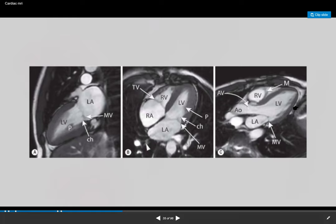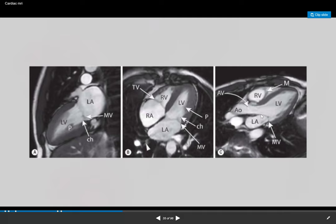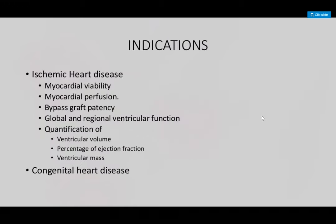There are many indications for cardiac MRI. In ischemic heart disease you want to look at myocardial viability. We also use myocardial perfusion imaging with gadolinium going into the myocardium. Bypass graft patency can also be assessed. EF is really accurately estimated by MRI, and many centers are now using cardiac MRI for monitoring cardiotoxicity from chemotherapy. Congenital heart disease is another key indication.